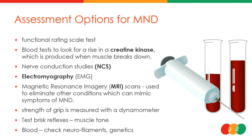Assessment options for MND include functional rating scales — questionnaires — as well as blood tests. Key tests include creatine kinase, nerve conduction studies, electromyography, and MRI. Grip strength is also assessed. Nerve conduction studies involve taping electrodes to nerves and recording muscle activity when nerves are stimulated by electrical impulses. EMG involves inserting a needle electrode into muscles to measure electrical activity. Blood tests can identify genetics and neurofilament levels.